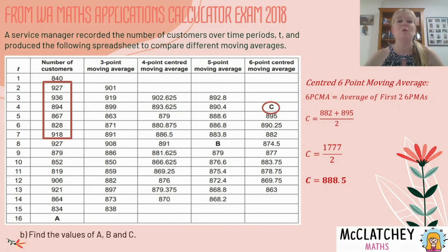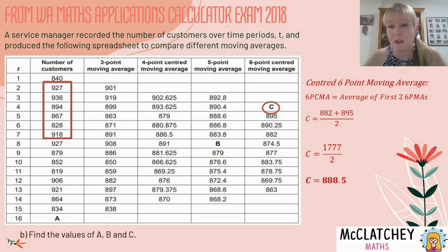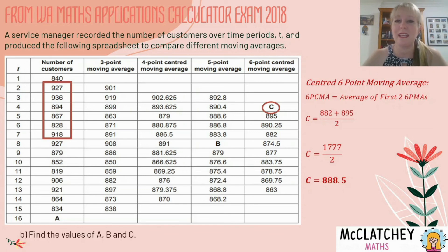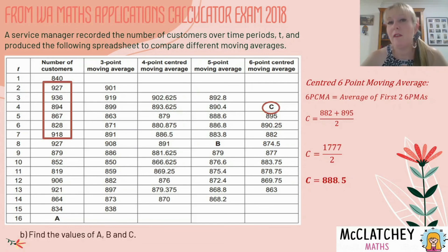There are some other ways to work this out. If you look up the West Australian Maths Applications calculator exam for 2018, they've used a slightly different method that recognises certain numbers in the middle — positions two, three, four and five — are used twice. There is a shortcut, but this method ensures you don't make any calculation mistakes.